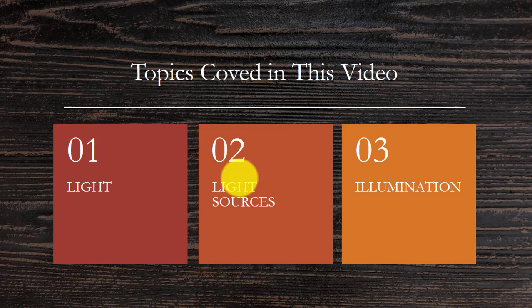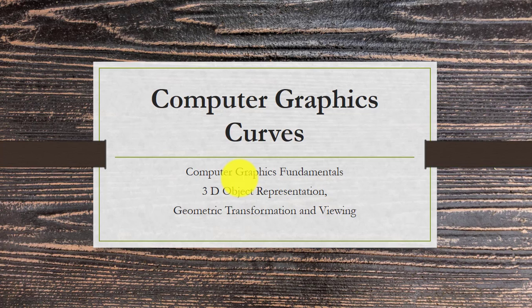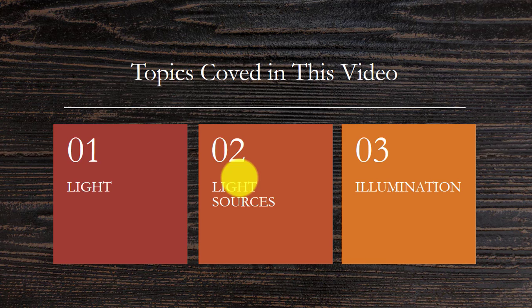That's just a short introduction about different light sources, what is light, and what is illumination. In the next video, we will see different types of color models used in computer graphics. If you have any questions, you can comment below. Thanks for watching this video.